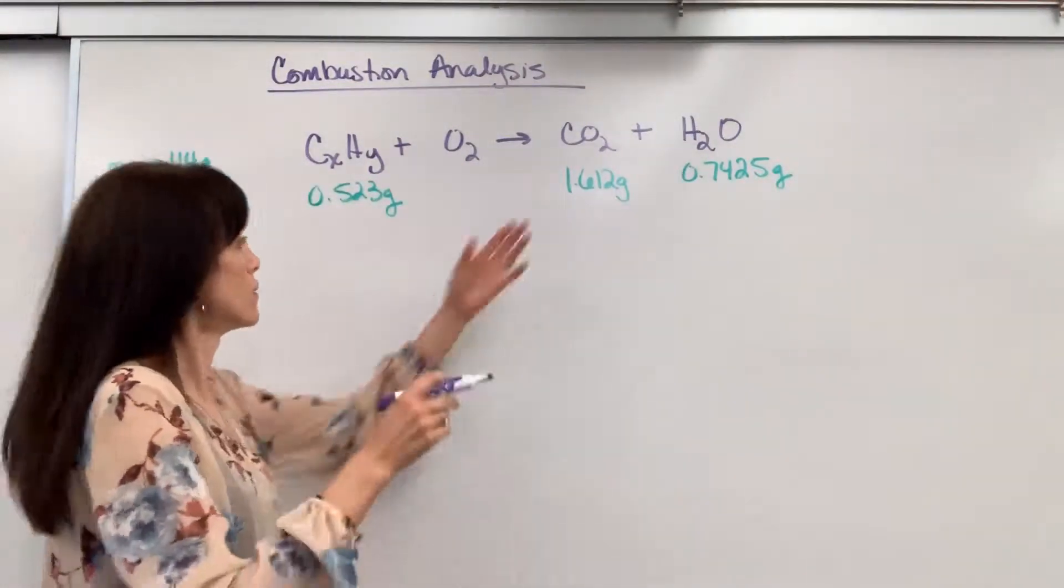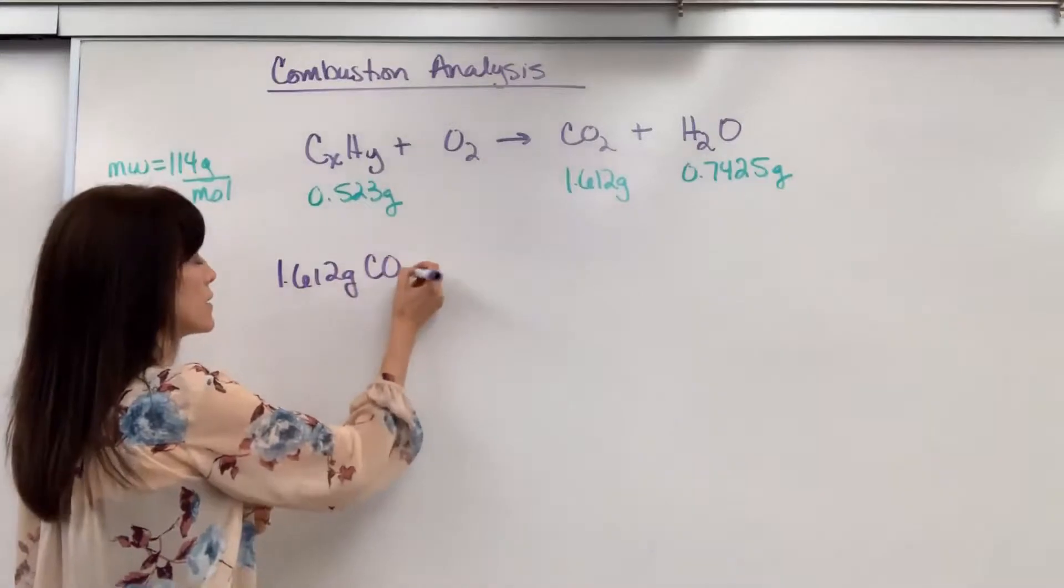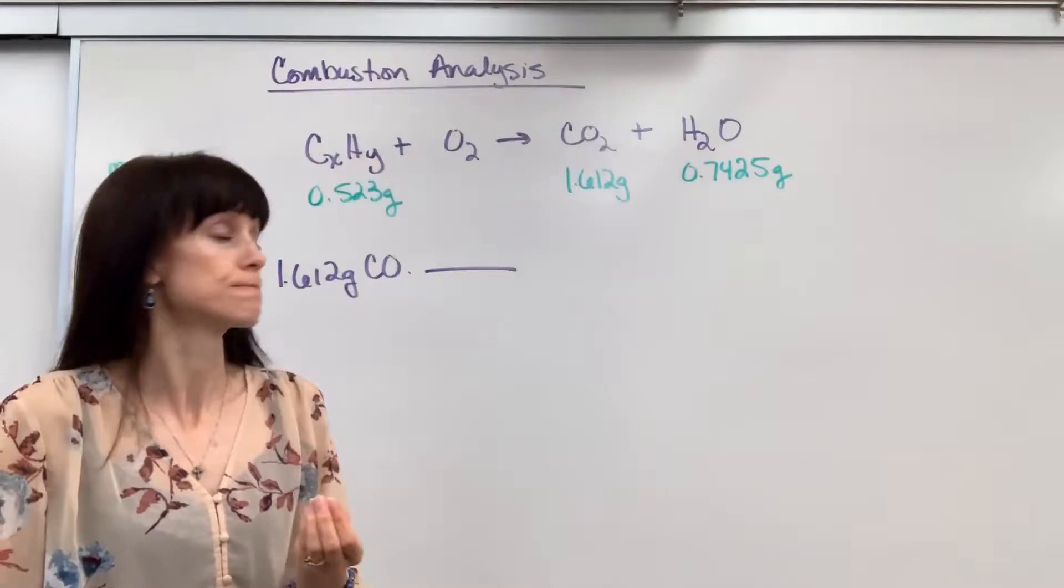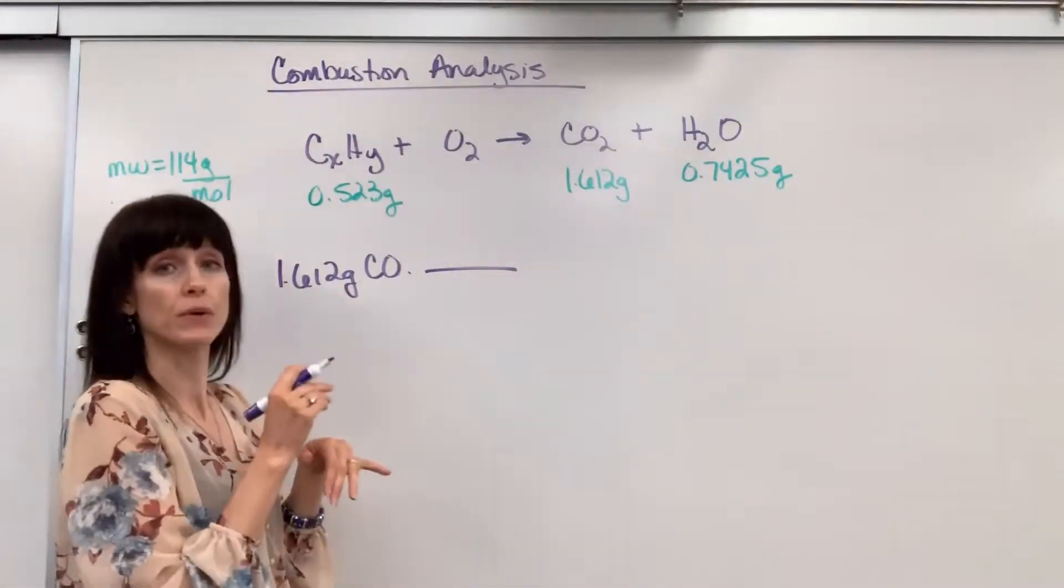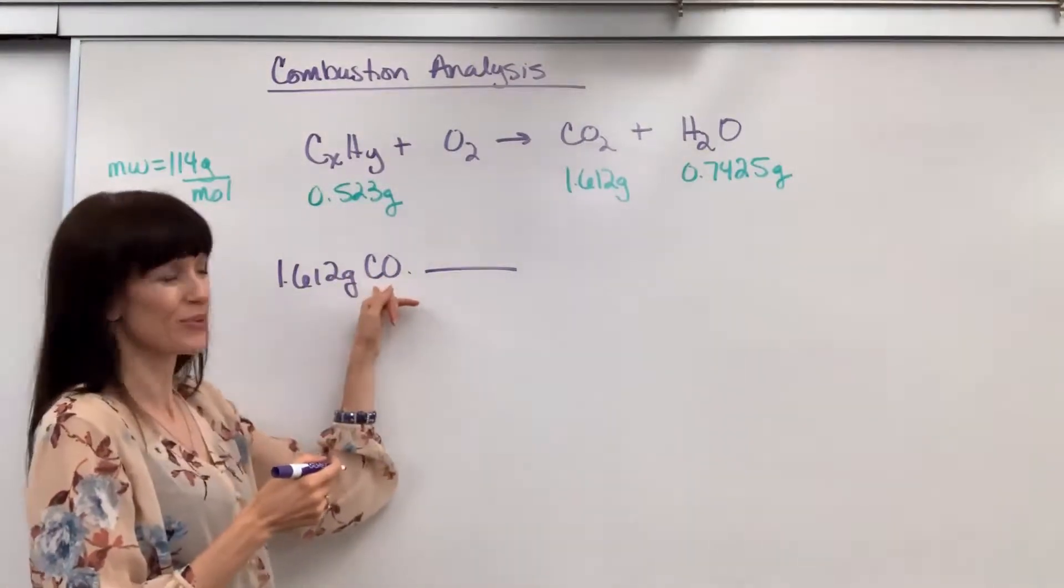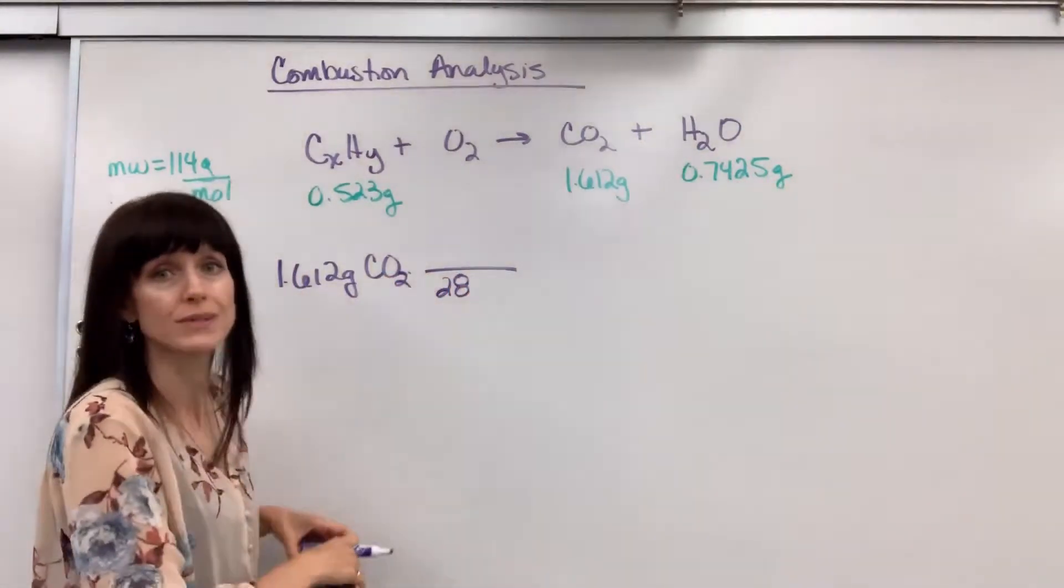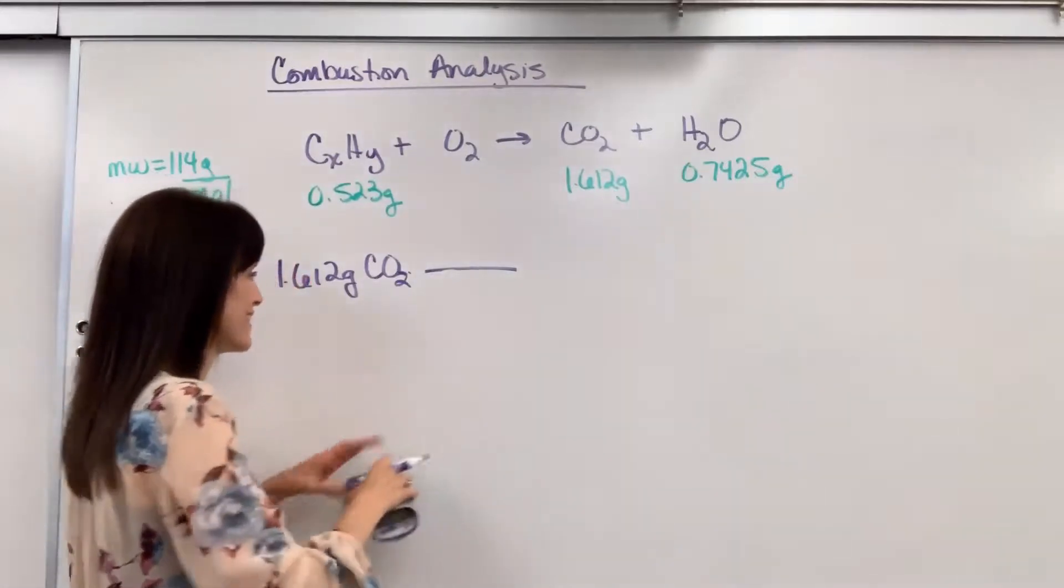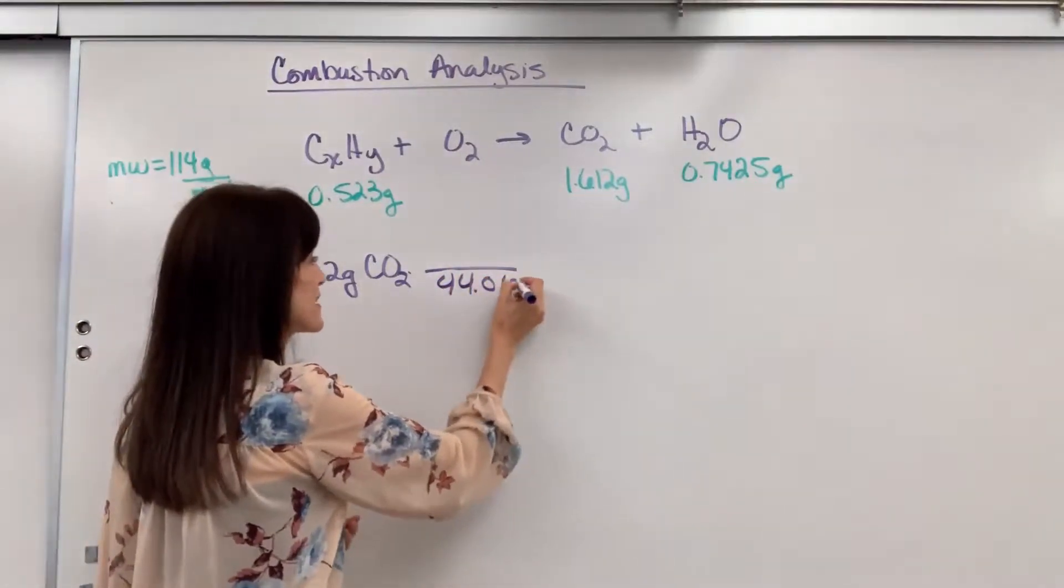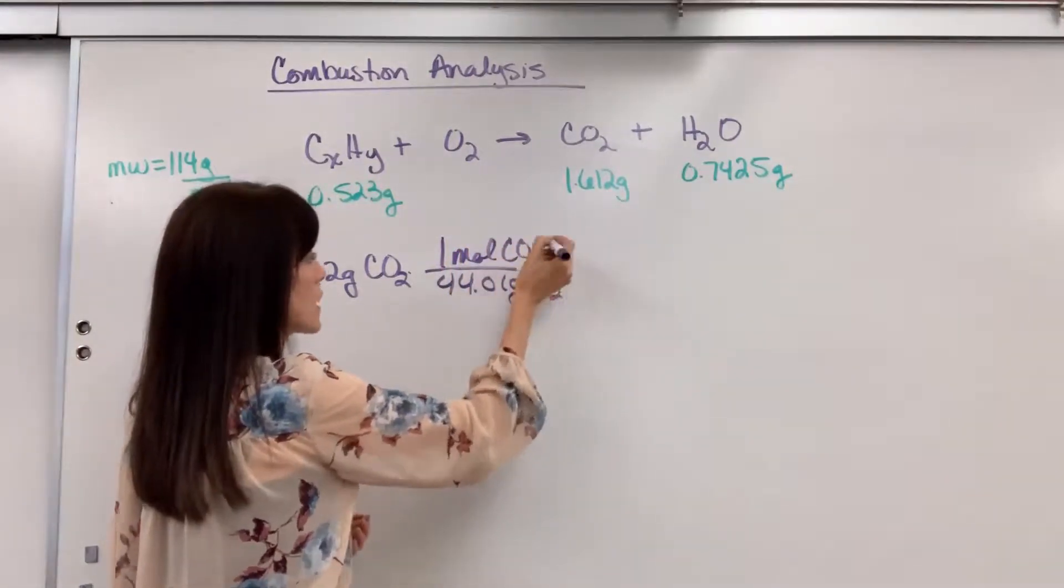Let's start with the carbon. Begin with what I'm given. We have 1.612 grams of carbon dioxide, but I want to know how much carbon there is. So we're going to go from grams to moles. Oxygen has a molar mass of 16, carbon is 12, and that gives us 28. Oh, so sorry, you forgot the 2. It's carbon dioxide. 2 times 16 is 32 plus 12. We get 44.01 grams of carbon dioxide in one mole.